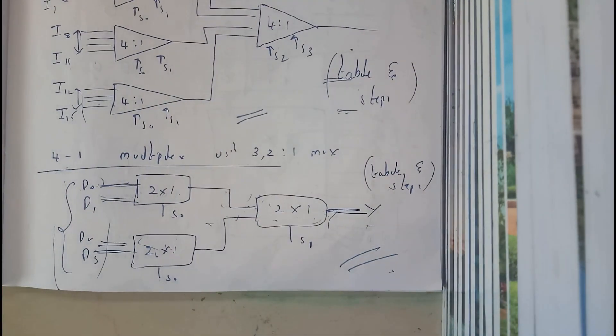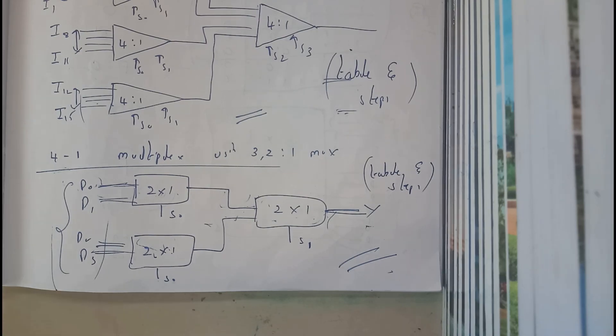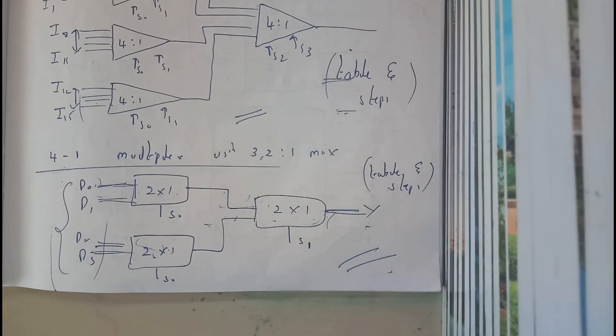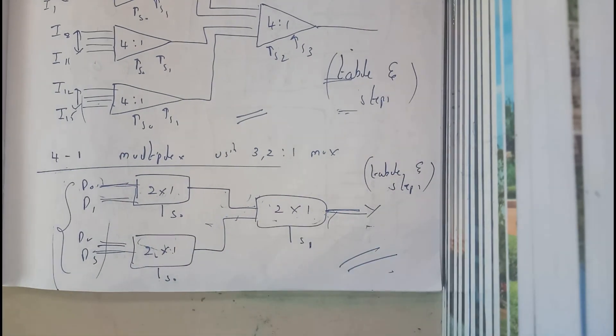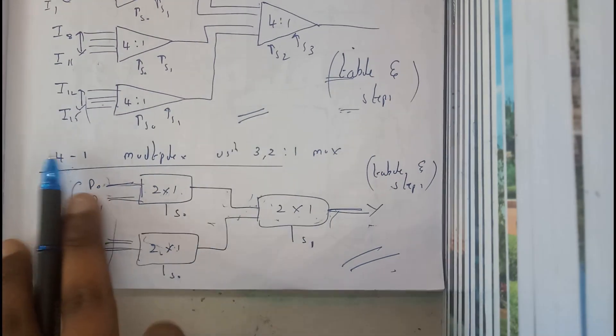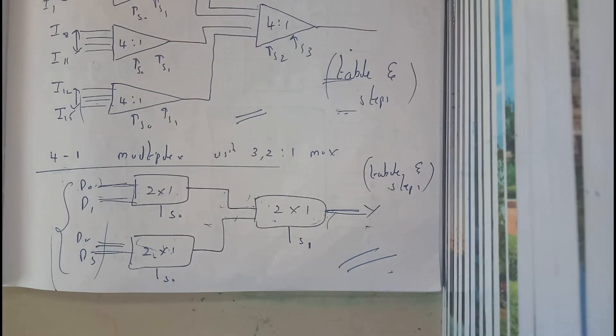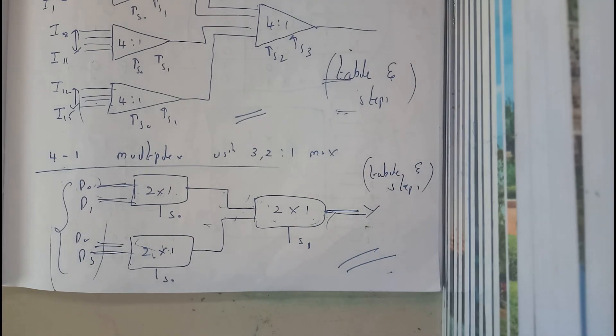To be clear, it is nothing but 4 inputs and one output. So we can directly call it as 4-to-1 multiplexer, as there is only a single output.